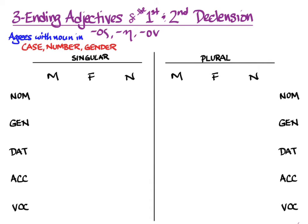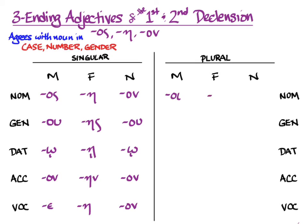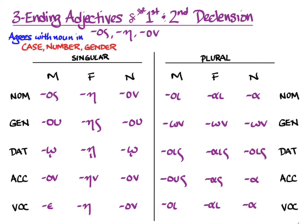Every adjective you learn will give you all genders of the nominative singular when you learn them in the vocabulary, and those endings should look familiar: the os of the second declension masculine, the a of the first declension feminine, and the on of the second declension neuter. You can see that these are all familiar endings — you know them both from learning first and second declension, and also most of them are the same as the endings of the article.